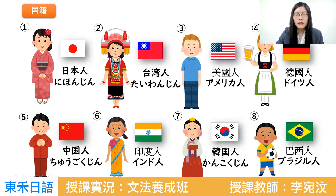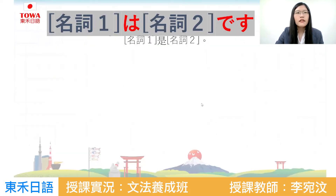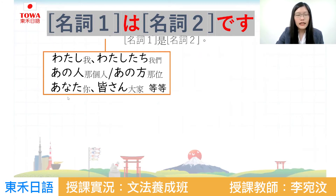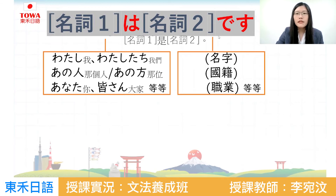這些字不是打簡字，它是日文的漢字。像台湾的「湾」、中国的「国」、韓国的「国」，都是日文的漢字，並不是簡字，一定要注意一下。名詞一は名詞二です的文型，名詞一的地方你可以放私、私たち（我們）、あのひと（那個人）。